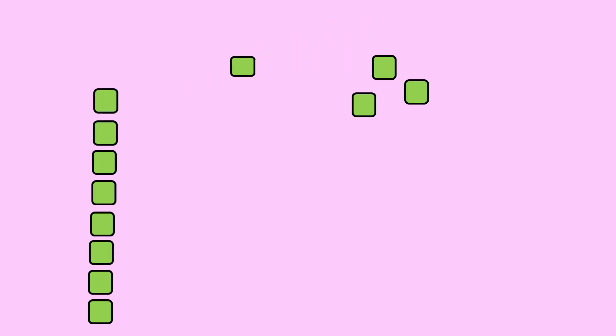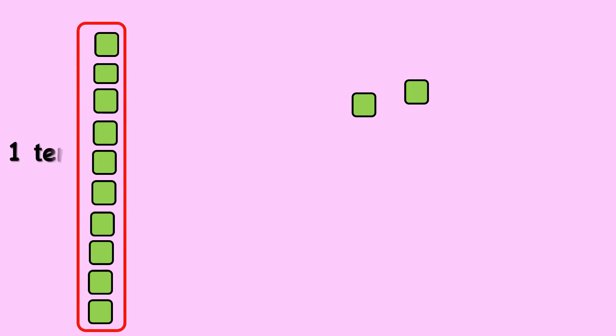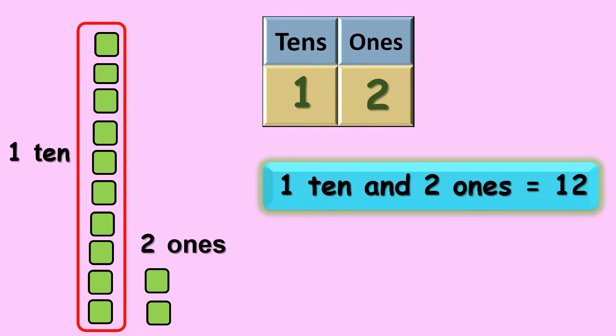Let's start arranging our blocks to find out the next number. 1 2 3 4 5 6 7 8 9 10. 10 ones gives you 1 ten. There are 2 ones. So 1 ten and 2 ones gives you 12.